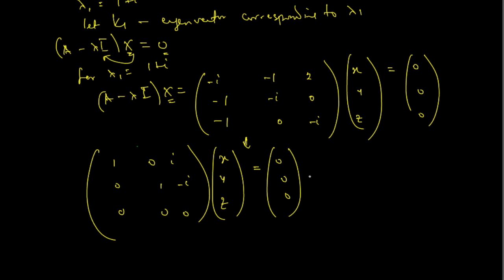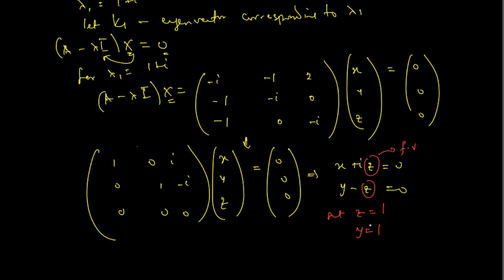The next thing you do is write this in equation format by multiplying the reduced matrix by the column matrix. On multiplication, we have x plus iz equals 0, and y minus z equals 0. Again, z is a free variable, so we set z equals 1. Then y equals 1, and x equals negative i. So I've been able to find k1: x is negative i, y is 1, and z is 1.